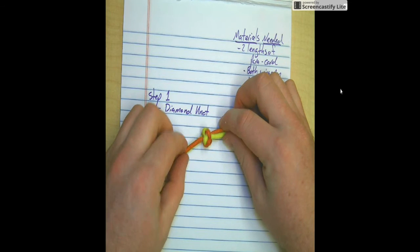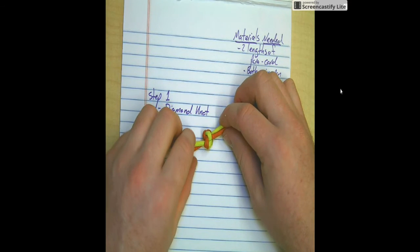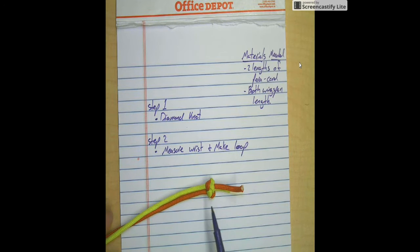You're going to end up with a knot. It looks something like this. Once you've made the diamond knot, the next part is going to be to measure your wrist and then make a loop.